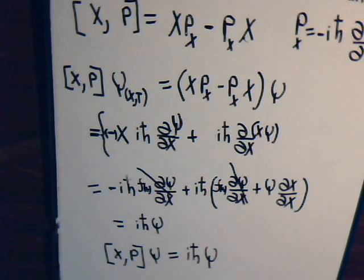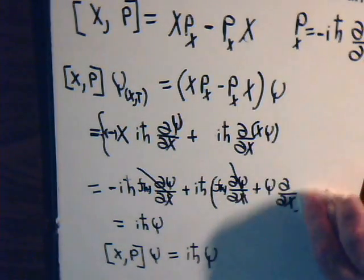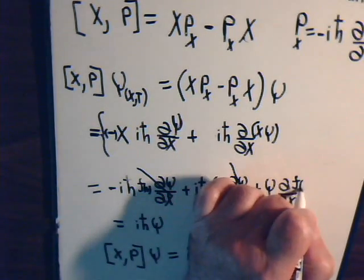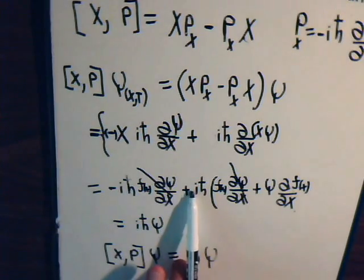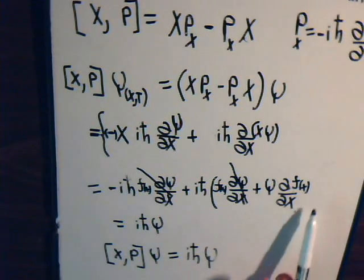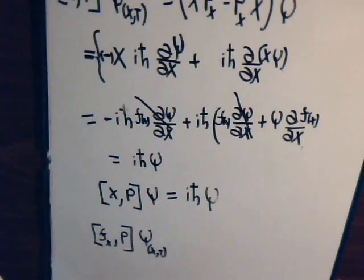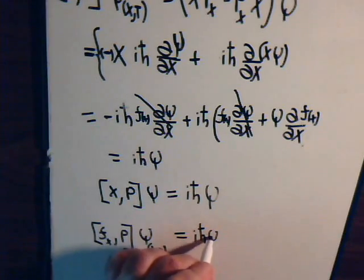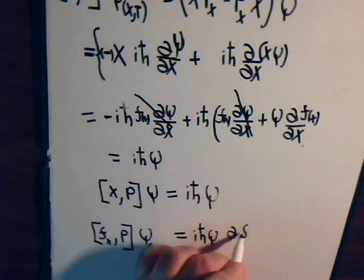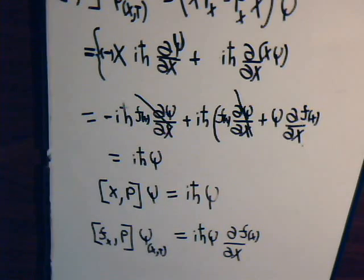So those two terms would still cancel, and then here instead of taking the partial of x with respect to x, like this. So now what we end up with is, these two terms cancel, and we have i h-bar psi times this partial derivative. So this will equal i h-bar psi times the partial derivative of f of x with respect to x.